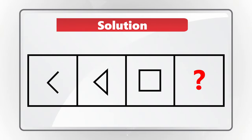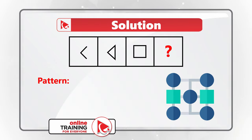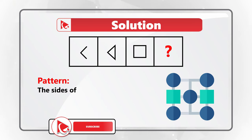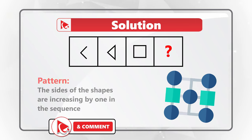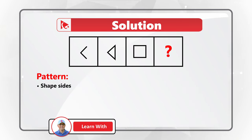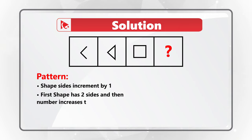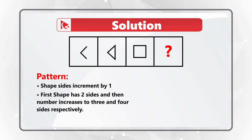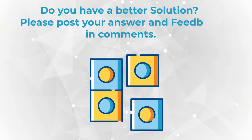The key to solving these types of challenges is to find the pattern. The pattern here is that the sides of the shape are increasing by one in each sequence. If you look at the first shape, it has two sides, and the number continuously increases to three and four sides respectively. This means that the missing shape should have five sides, and only shape B has five sides.